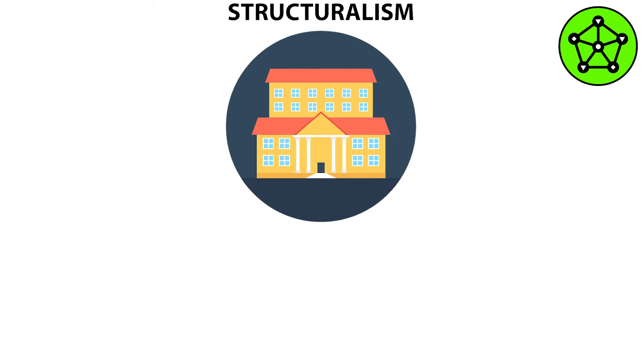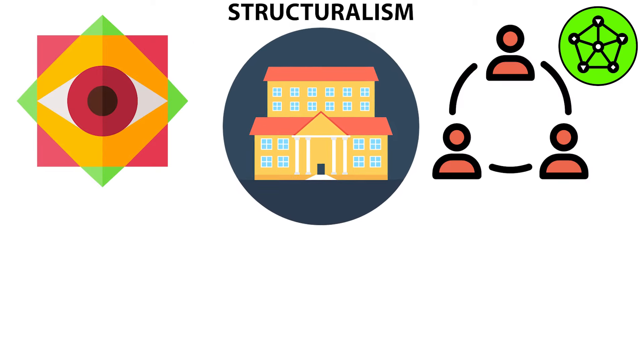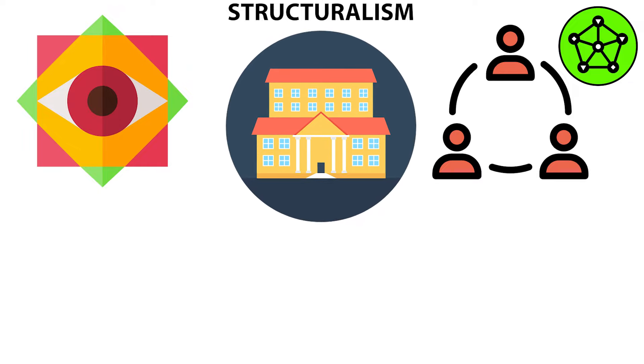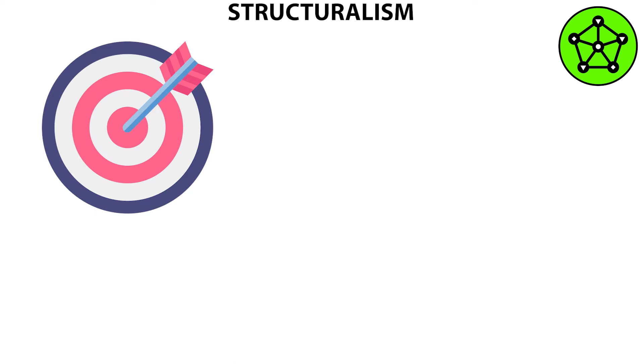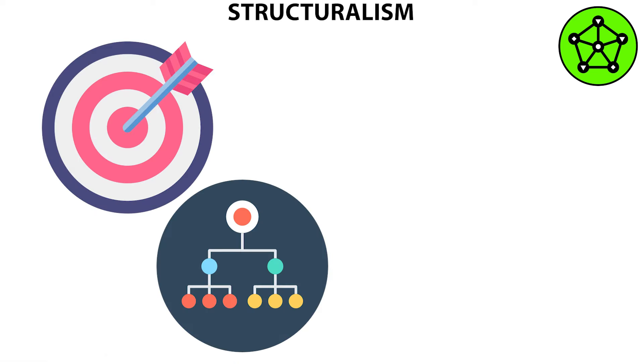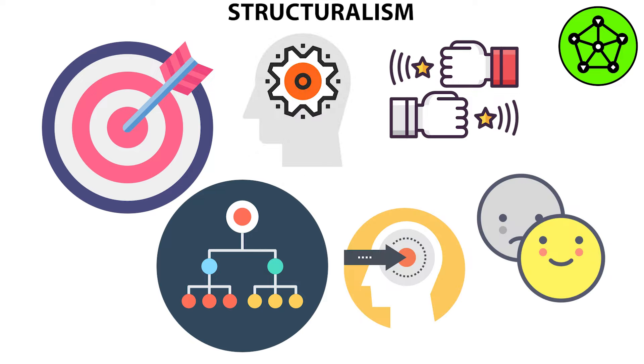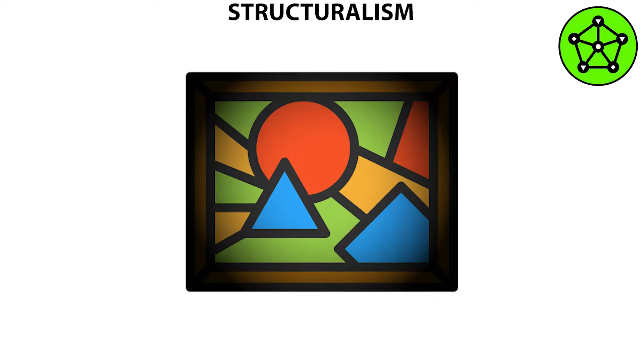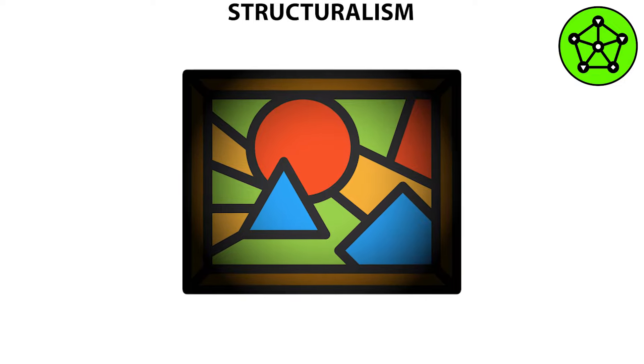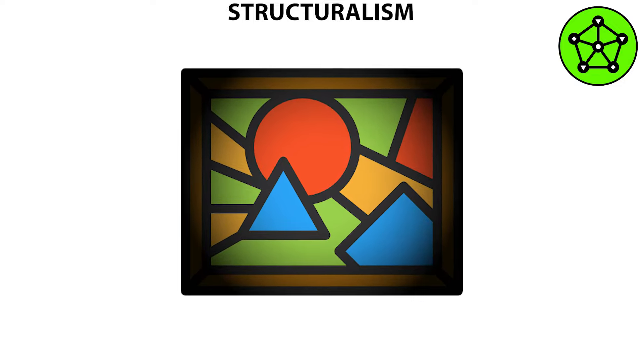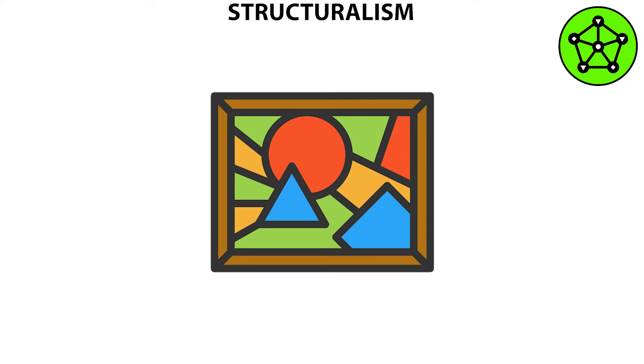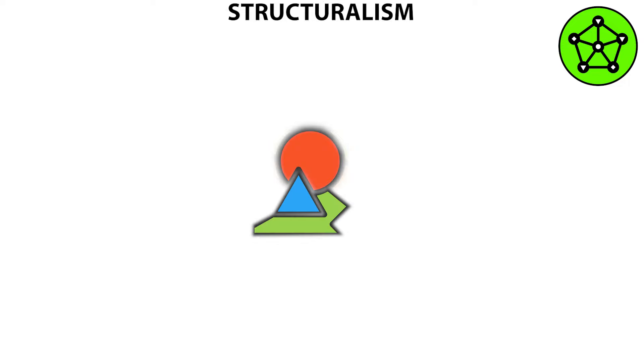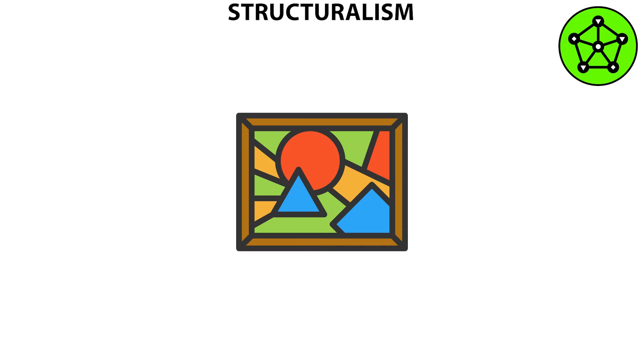Structuralism is a school of thought in philosophy and social sciences that interprets elements of human culture by their relationship to a broader system. It aims to uncover the structural patterns that underlie all the things that humans do, think, perceive, and feel. In simpler terms, imagine you're looking at a beautiful painting. Instead of focusing on each individual brushstroke, structuralism encourages us to step back and see the bigger picture. It's about understanding how each part contributes to the overall structure.